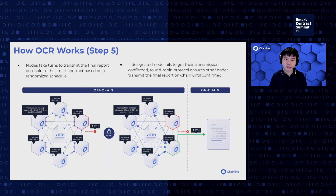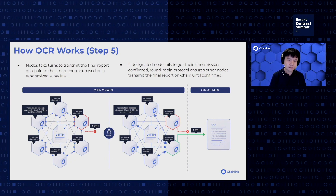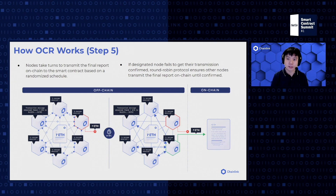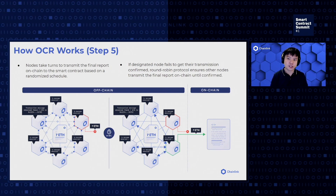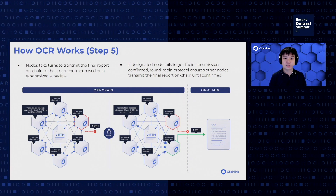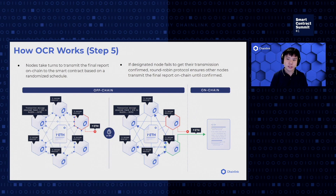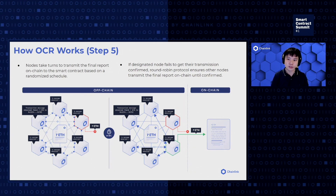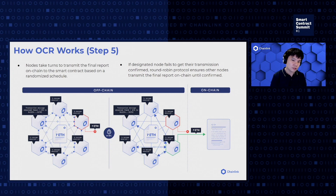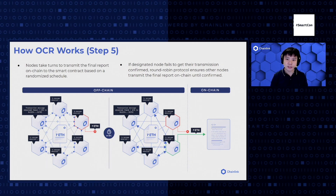What's interesting is that since the report contains the signature of every oracle node that has responded, this allows us to attribute accountability and reputation for oracle nodes. We can then use this attribution together with fraud proofs and optimistic approaches to achieve trust minimization and ensure integrity at the transport layer.